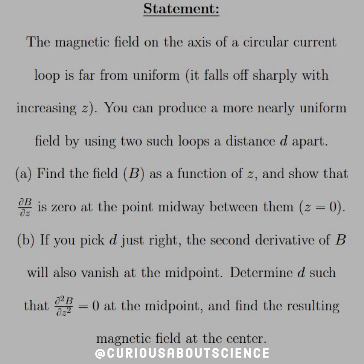Part A: Find the field B as a function of z and show that the first derivative, or partial derivative with respect to z, is zero at the point midway between them, i.e. where z equals zero.